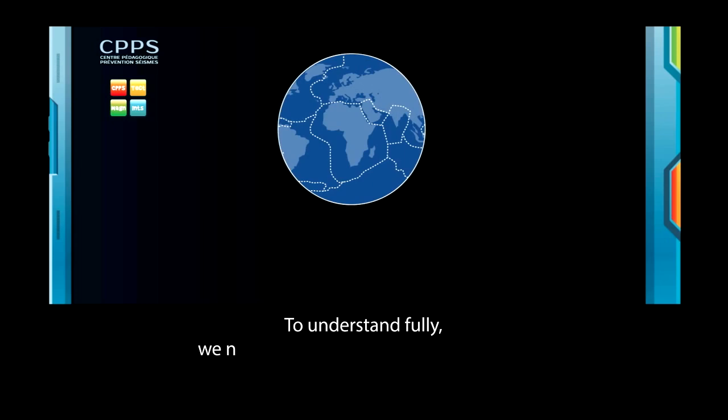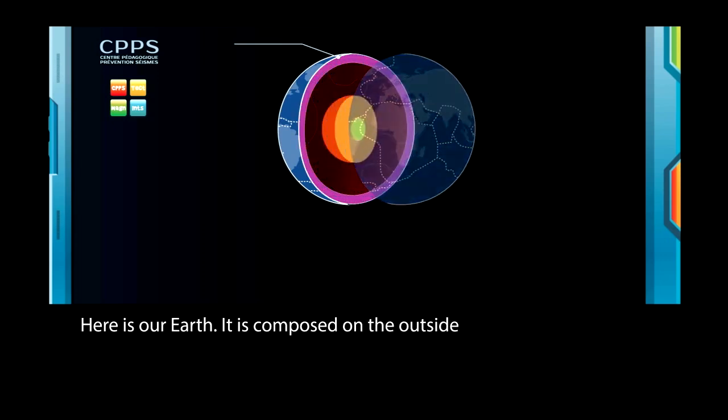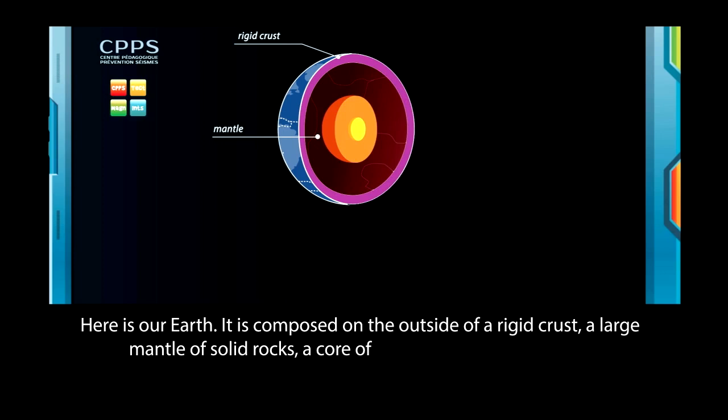To understand fully, we need to look at how our planet works. Here is our Earth. It is composed on the outside of a rigid crust, a large mantle of solid rocks, a core of liquid iron and a solid core.